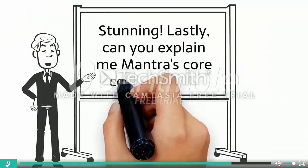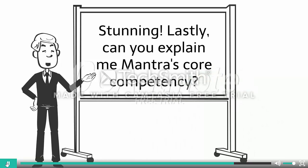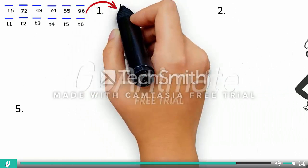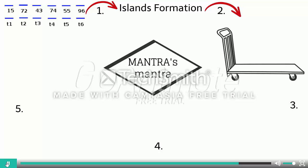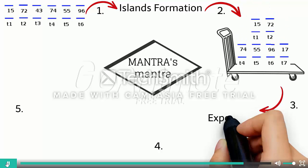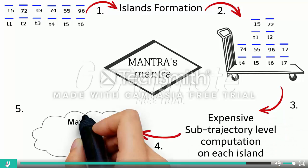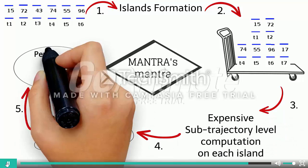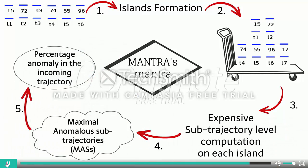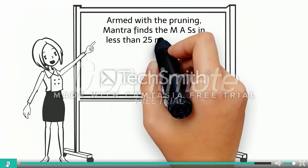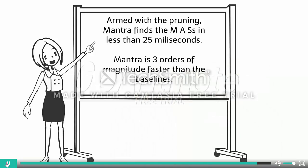Can you explain MANTRA's core competency? The input trajectory goes for island formation. Islands alone contain the MASs. Each island undergoes sub-trajectory level analysis to find MASs, which can be used to find the anomaly percentage. Armed with pruning, MANTRA finds the MASs in less than 25 milliseconds and is three orders of magnitude faster than the baselines.